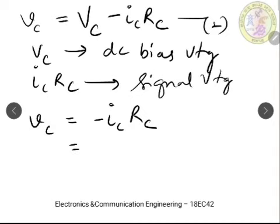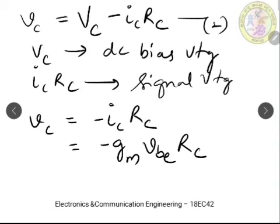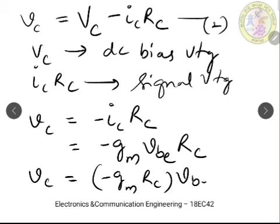This can be further written in terms of Gm also: vc = −Gm × Vbe × Rc. This is because IC = Gm × Vbe as derived in the previous session. Therefore vc = −Gm × Rc × Vbe. Call this Equation 3, because on the LHS we have vc (output) and on the RHS we have Vbe (input).